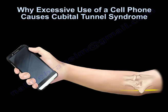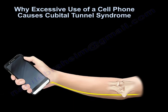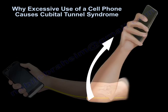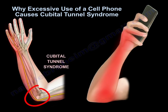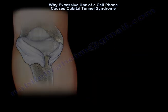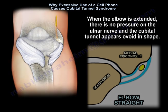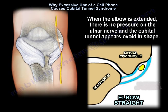Why does excessive use of a cell phone cause cubital tunnel syndrome? When the elbow is extended, there is no pressure on the ulnar nerve, and the cubital tunnel appears ovoid in shape.